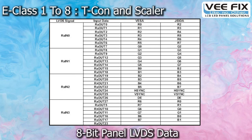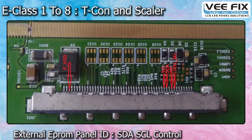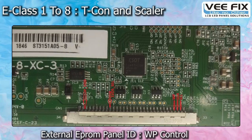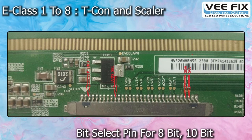We will explain in detail what is coming inside these LVDS data pairs. Also, some control signals like LVDS mapping, panel ID mapping like SCL, SDA pin, write protect pin, and the bit select pin for 8-bit and 10-bit panels. Every control signal will be explained — how it is coming from the motherboard, what its function is, and how to alter these control signals for the compatible panel replacement process.